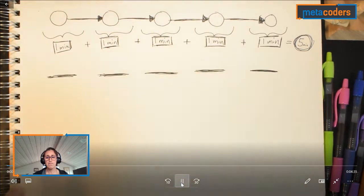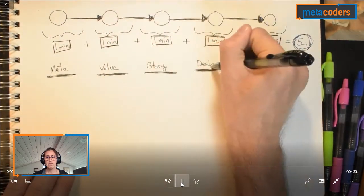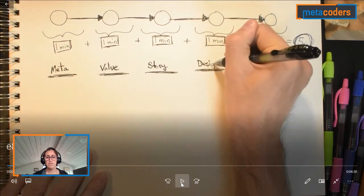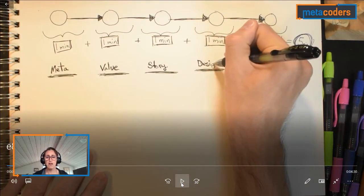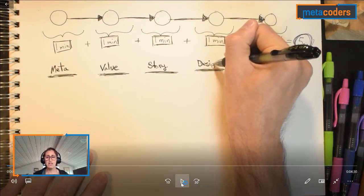I guess meta, value, story, design, and big. All right, so there are five parts of this five-minute episode. The first minute we're going to talk about is meta. Let's hear what that means.